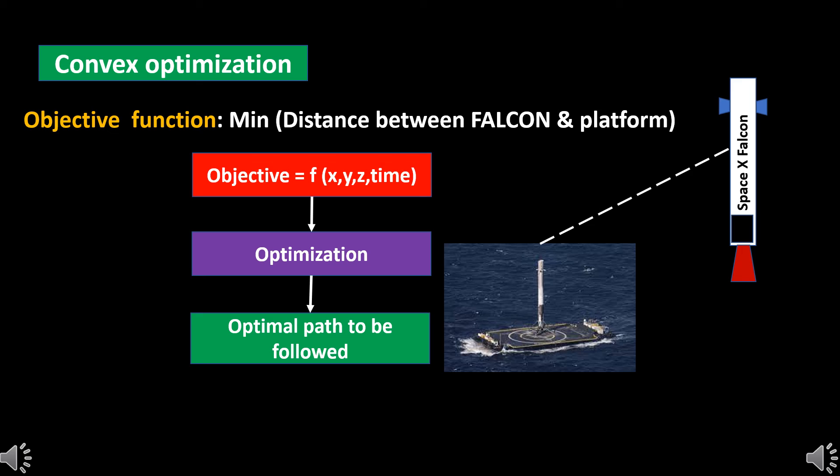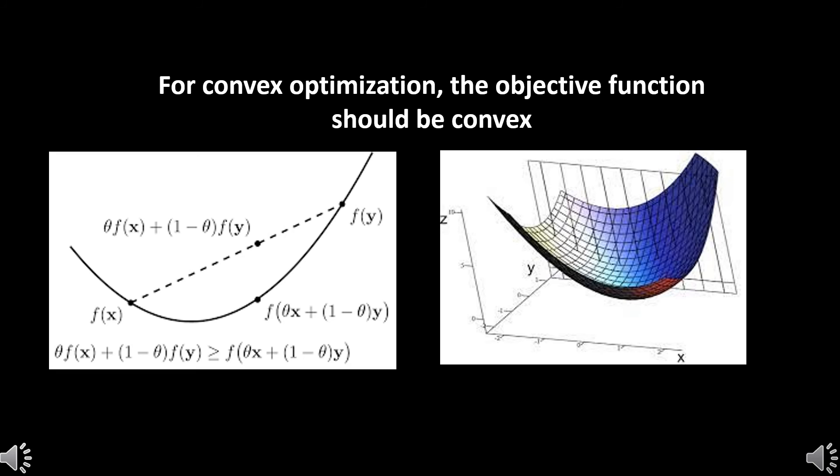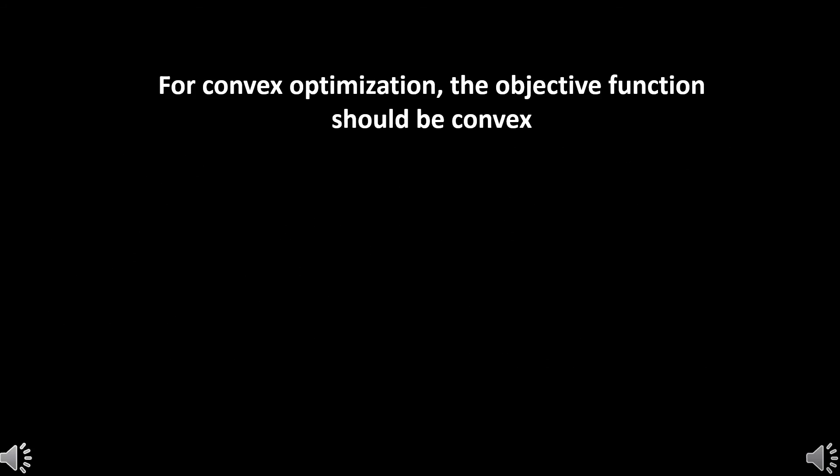So what is convex optimization? If the objective function has the convex shape shown then we can say it is convex optimization. It has well established numerical iterative methods to solve for the minima like the famous gradient descent method. So if a problem is convex, implementation becomes easier.